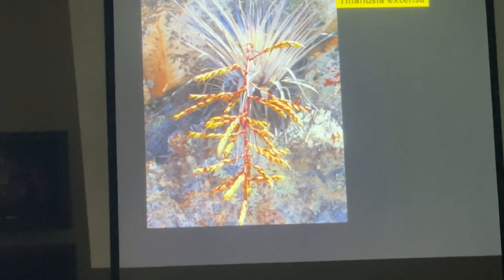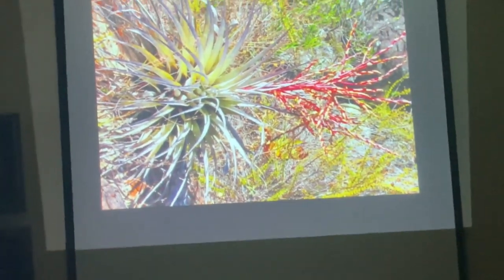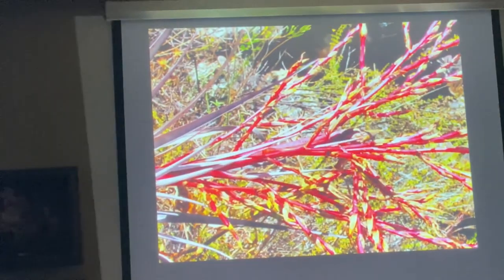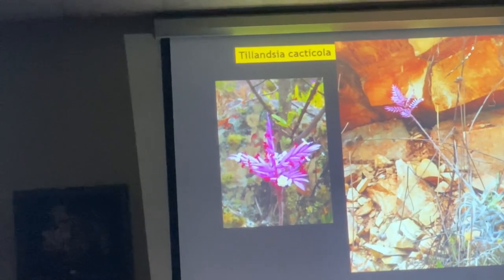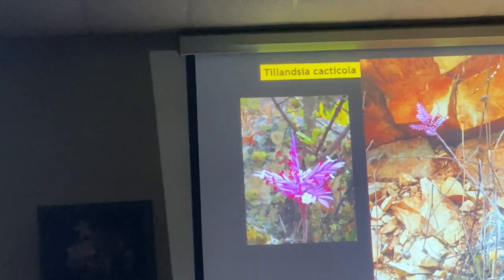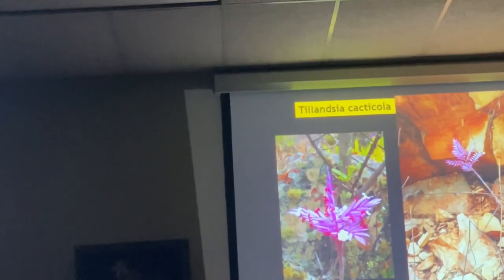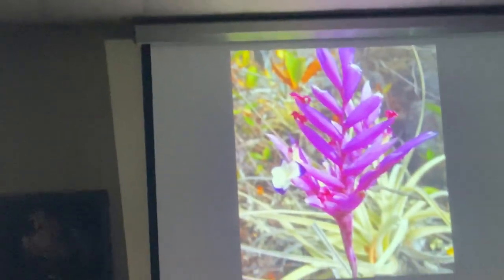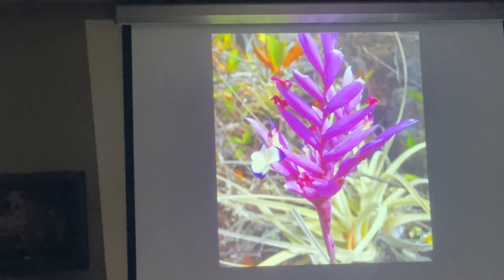Tillandsia extensa is a fairly large plant — very uncommon and hard to find. On some trips we don't find it. It has a very large inflorescence. Tillandsia cacticola is very similar to Tillandsia straminea — the difference is in the bracts, overlapping or not overlapping.